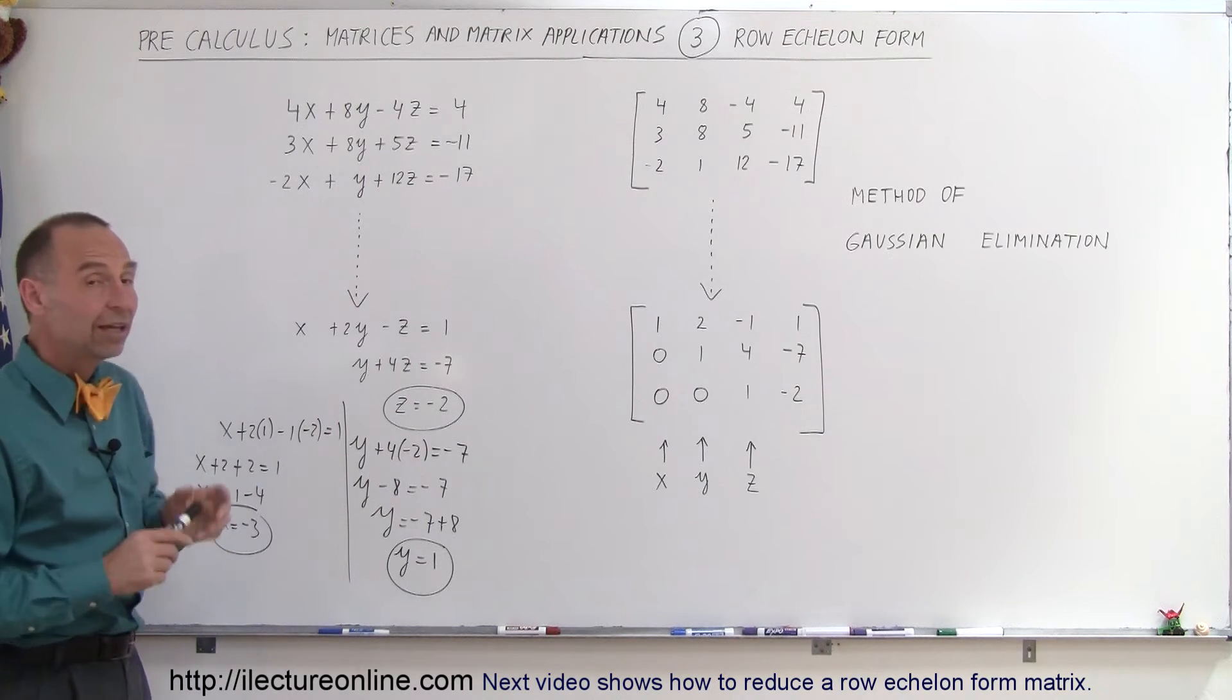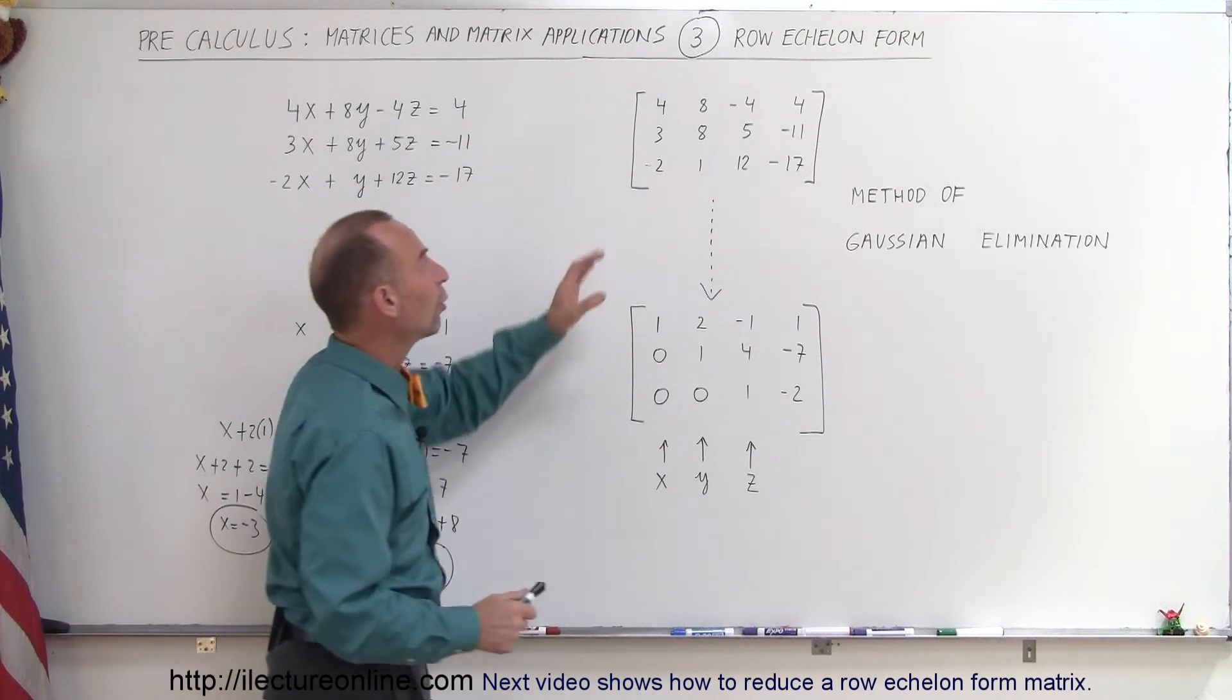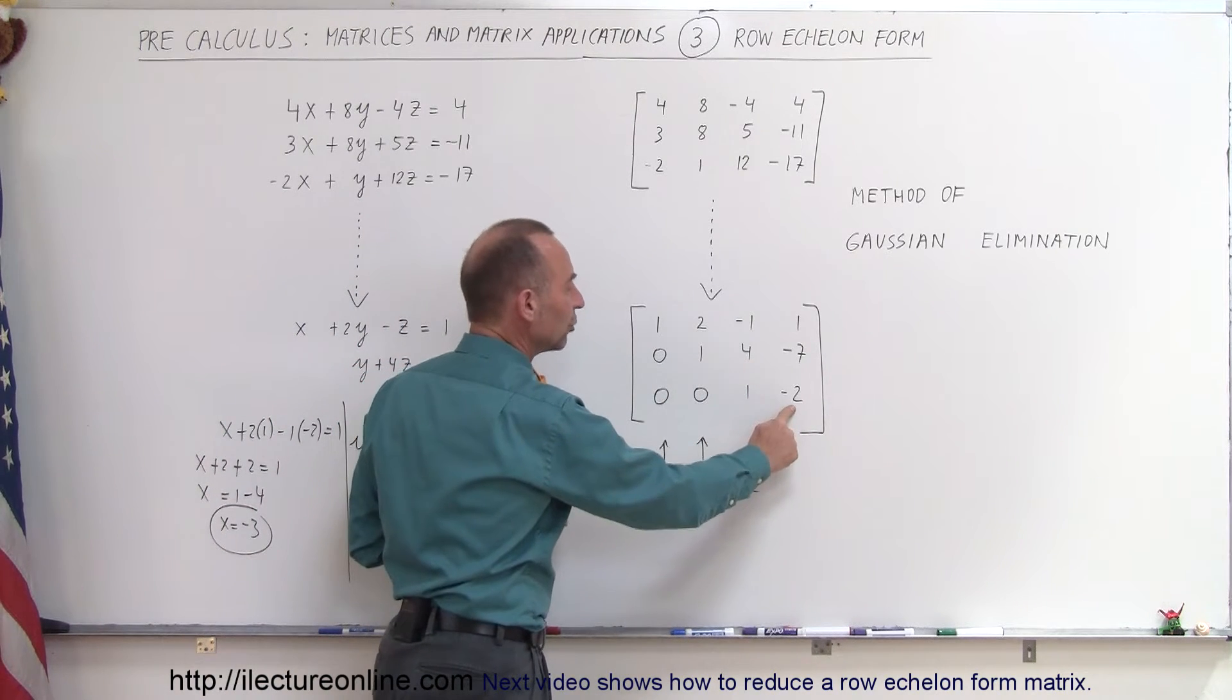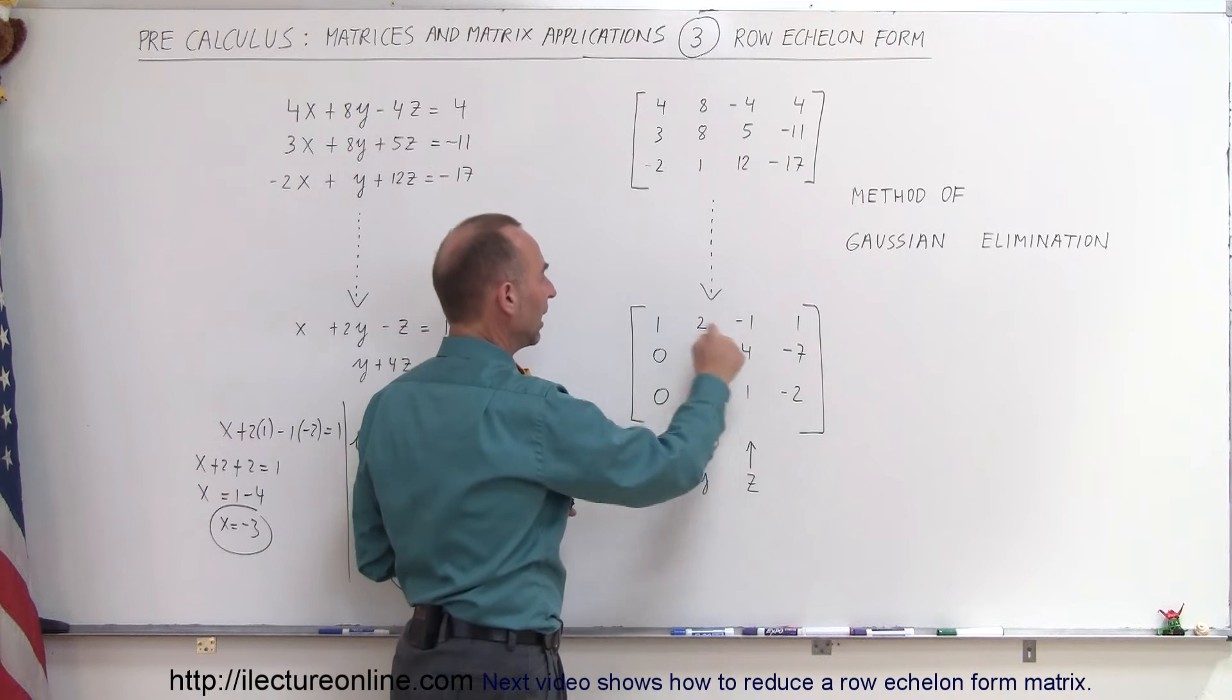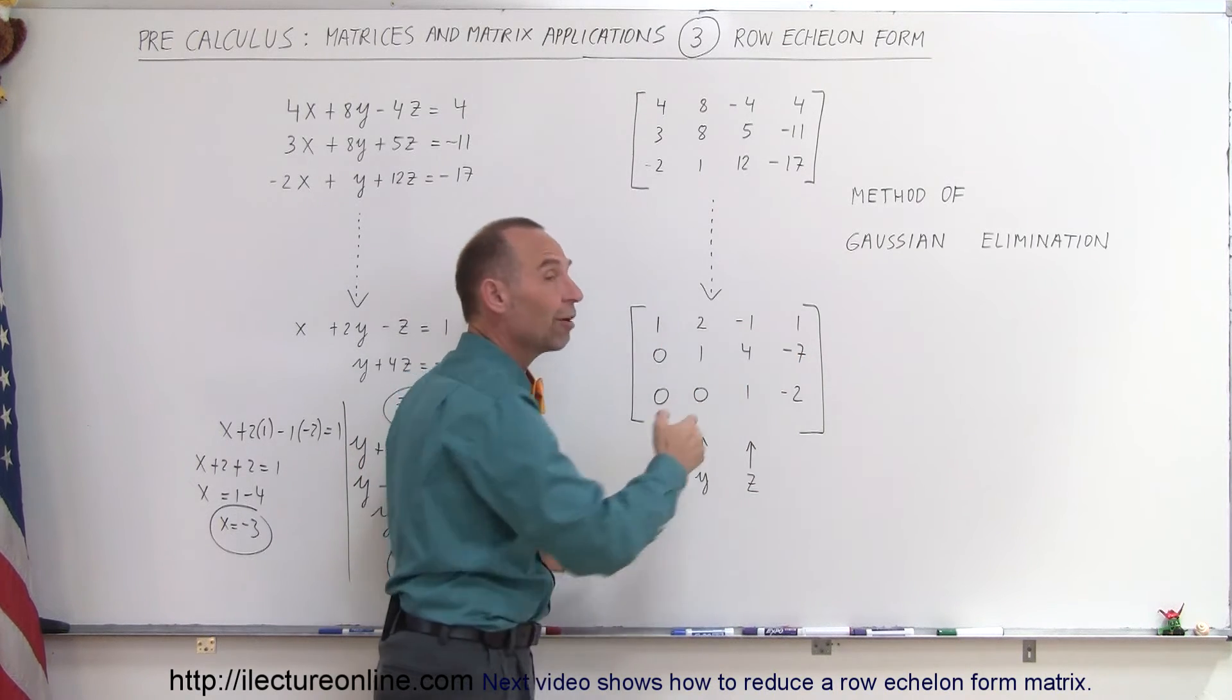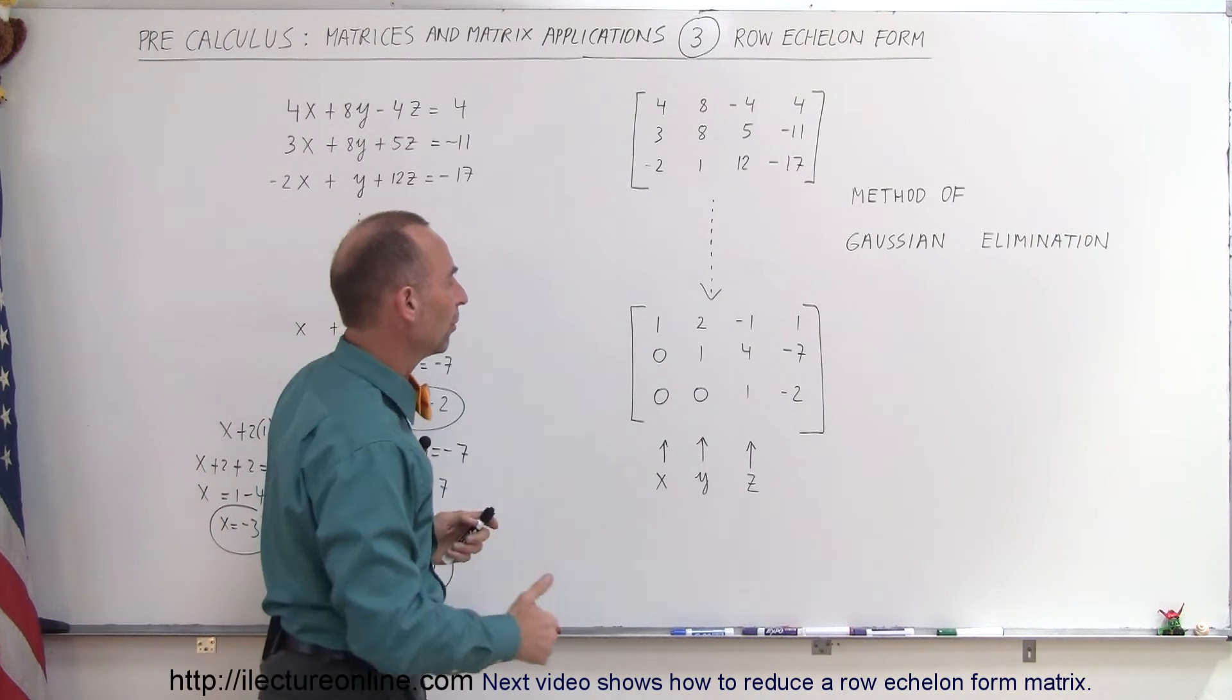So the concept is, if we can do the same over here with the augmented matrix, we can go from this format to this format, and then we have the exact same thing where we have z equals negative 2, 1 times y plus 4 times z equals negative 7, and 1 times x plus 2 times y minus 1 times z equals 1, and so very easily this can be solved for x, y, and z as well. This is called the row echelon form.